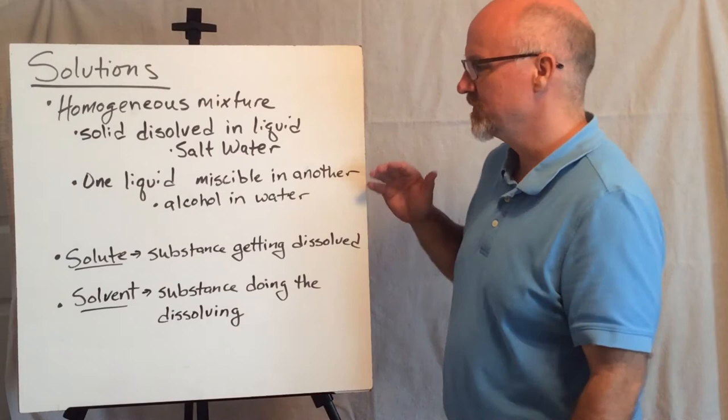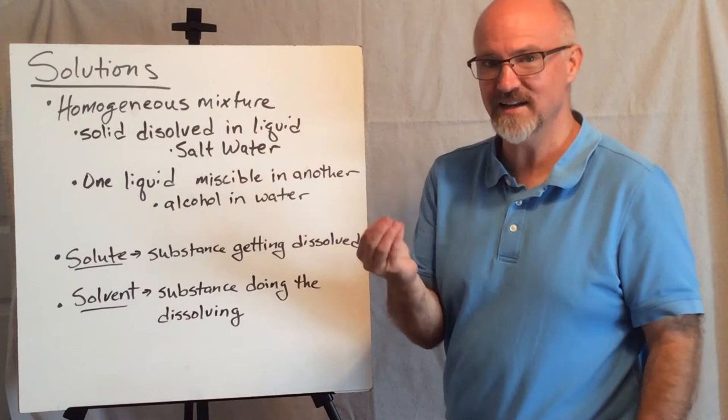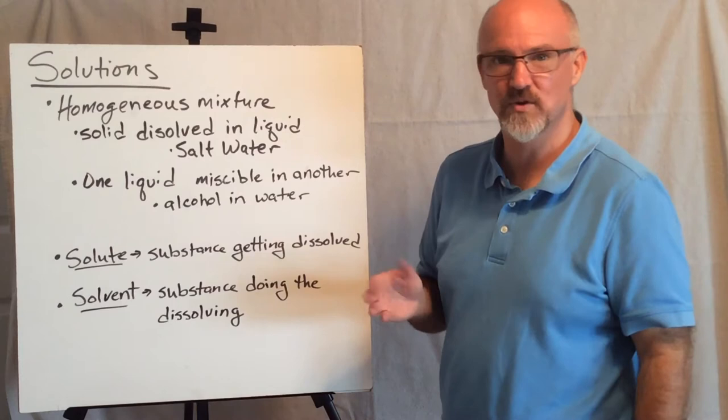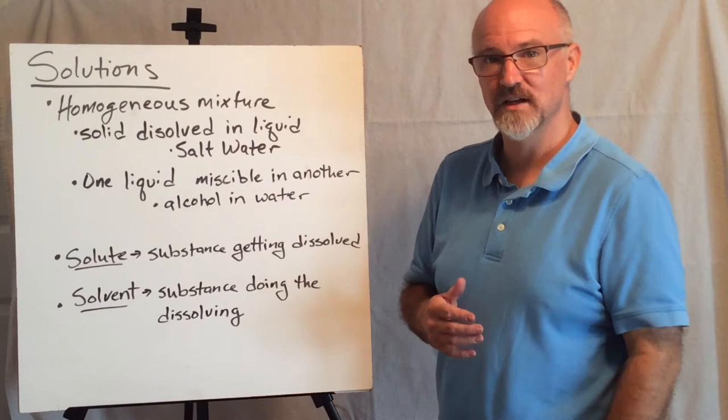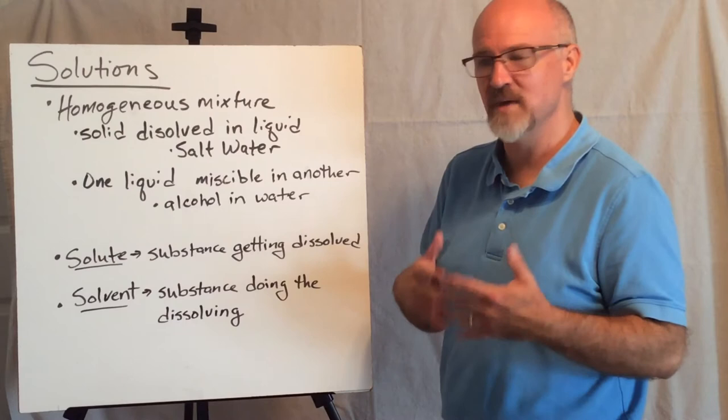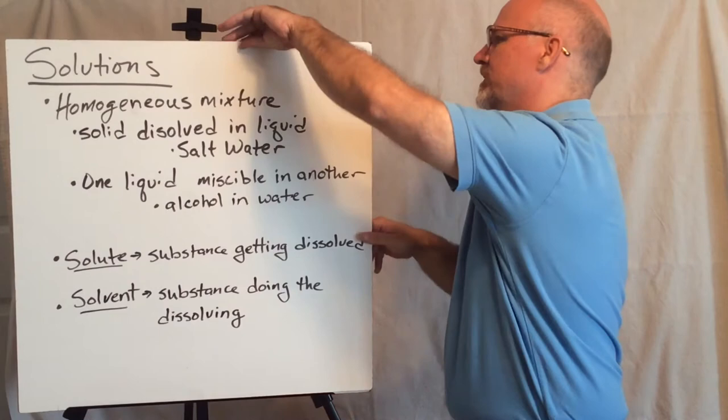So a couple of key terms here. When we make a solution, there are two parts: the thing that is getting dissolved and the thing doing the dissolving. The thing getting dissolved is the solute. And the thing doing the dissolving, which is the thing in a larger proportion, is the solvent. Those are the two components of a mixture that make this homogeneous situation called a solution.